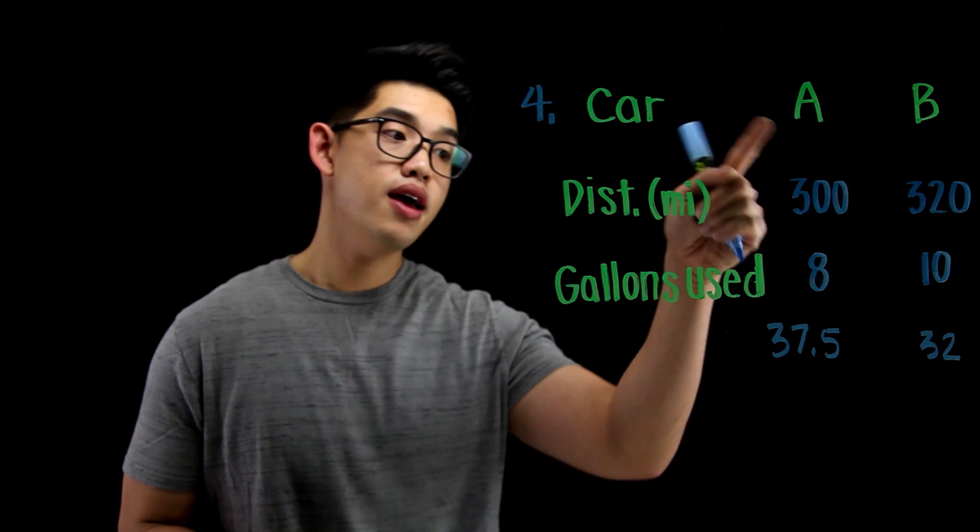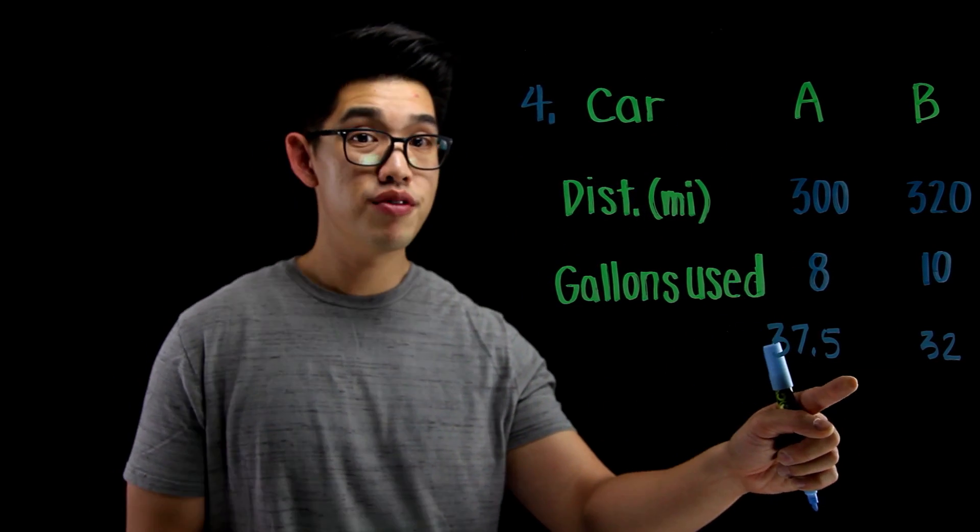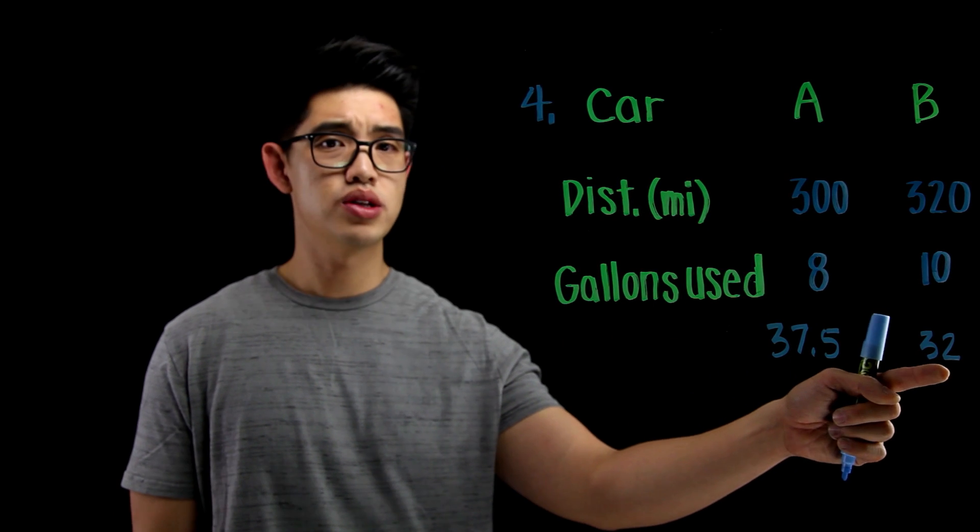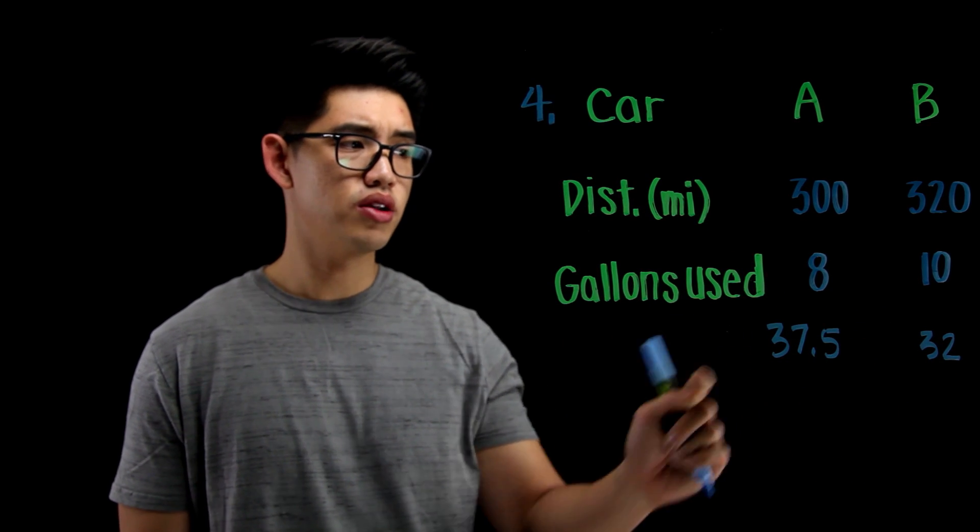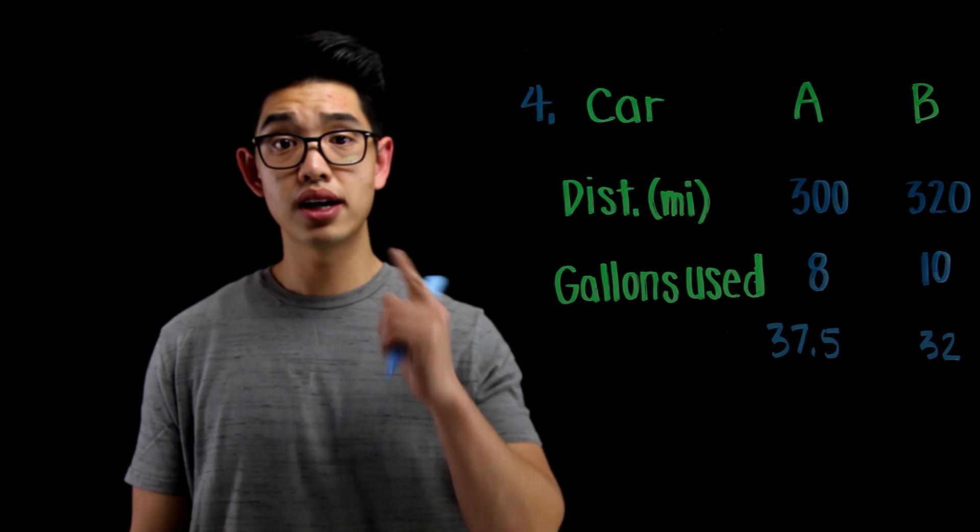I'm going to choose A because you can drive 37.5 miles per one gallon. Why would I choose this one? This one is very little, right? You can get a little bit more with this car right here. So the answer is car A.